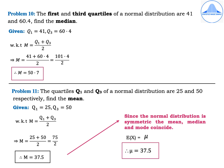Problem 11: The quartiles Q1 and Q3 of a normal distribution are 25 and 50 respectively — find the mean. This problem uses the property that the normal distribution is symmetric, meaning mean, median and mode all coincide. First calculate the median. Given Q1 = 25 and Q3 = 50.